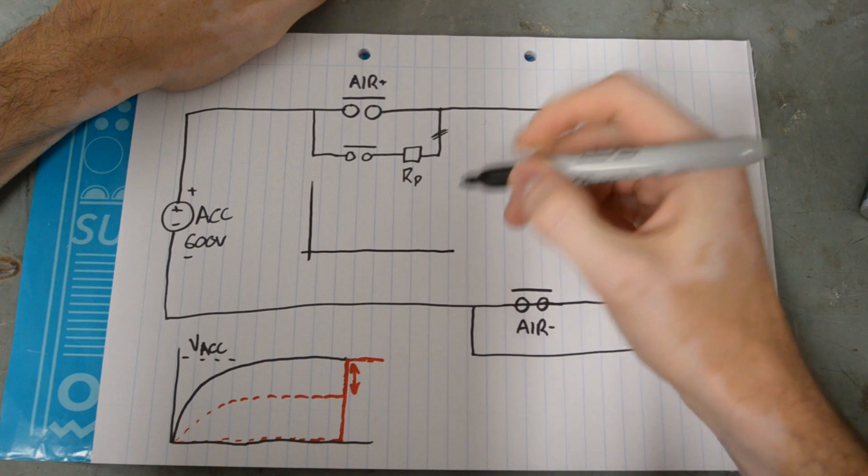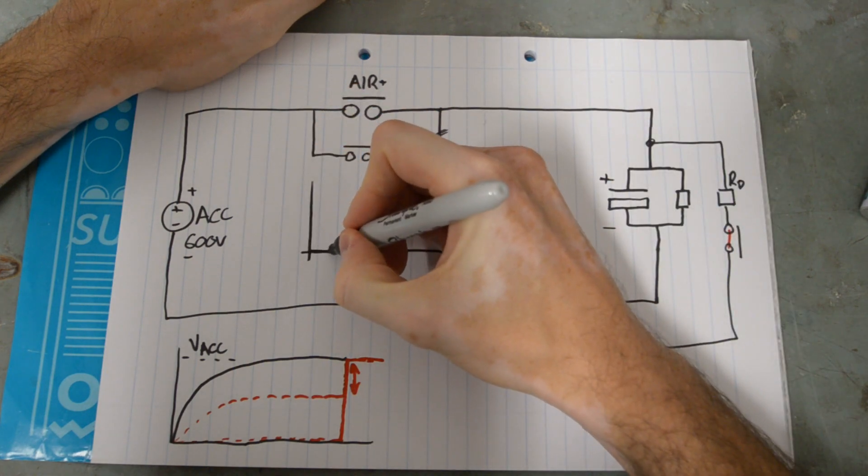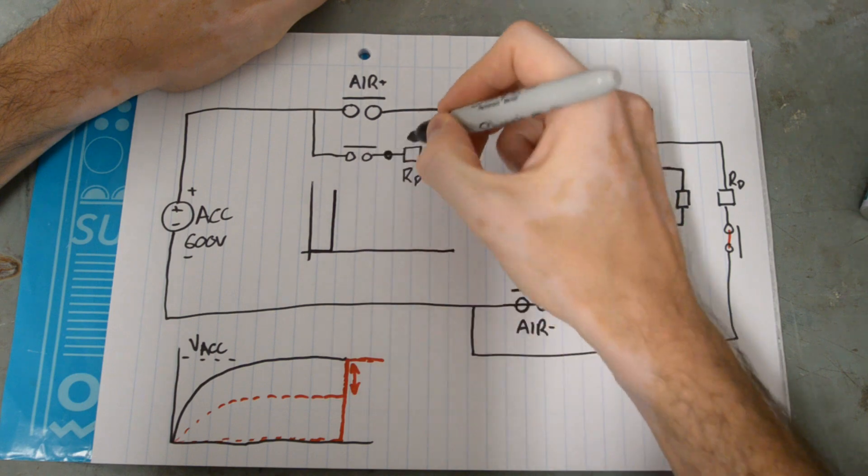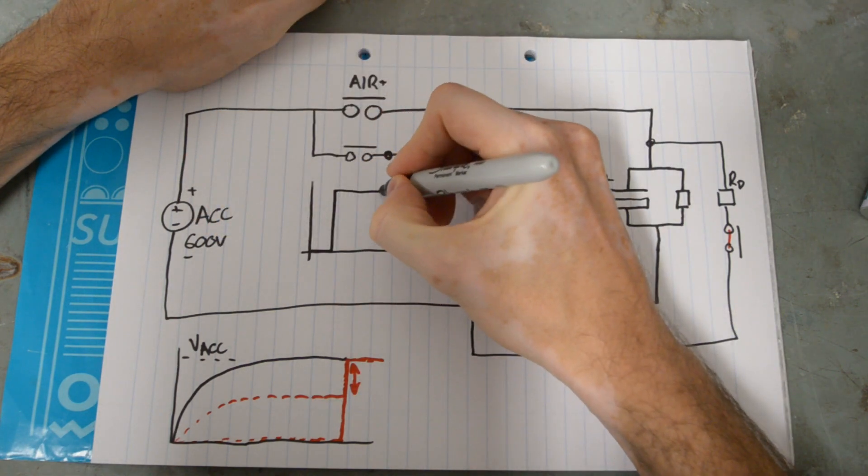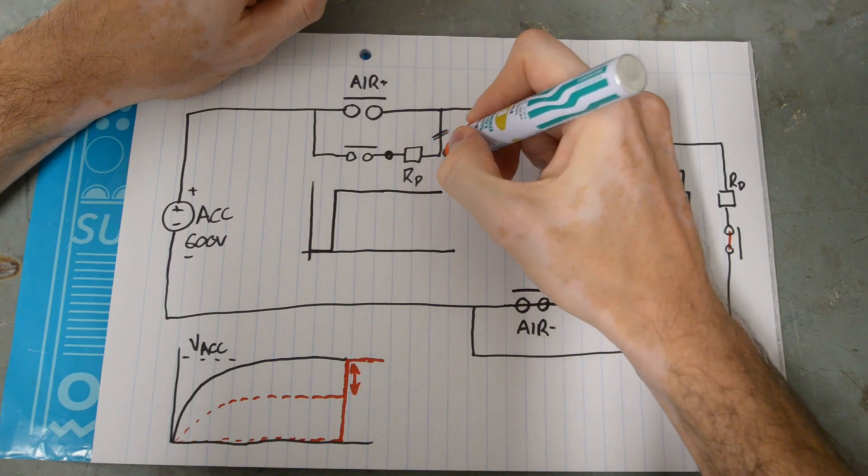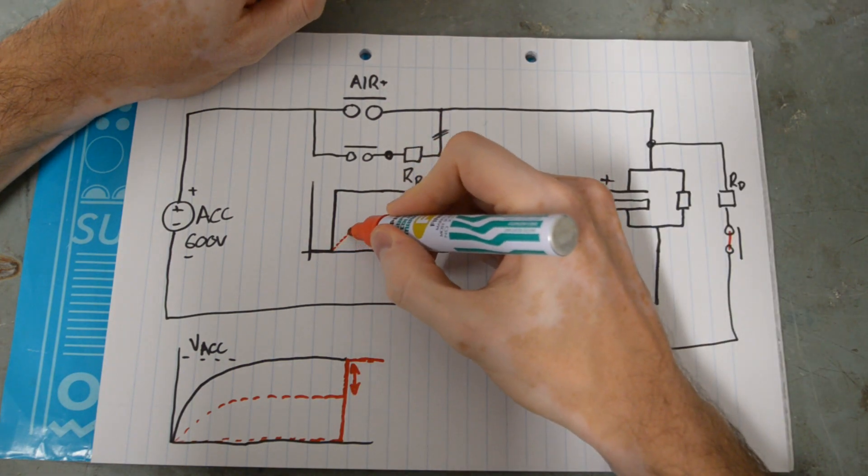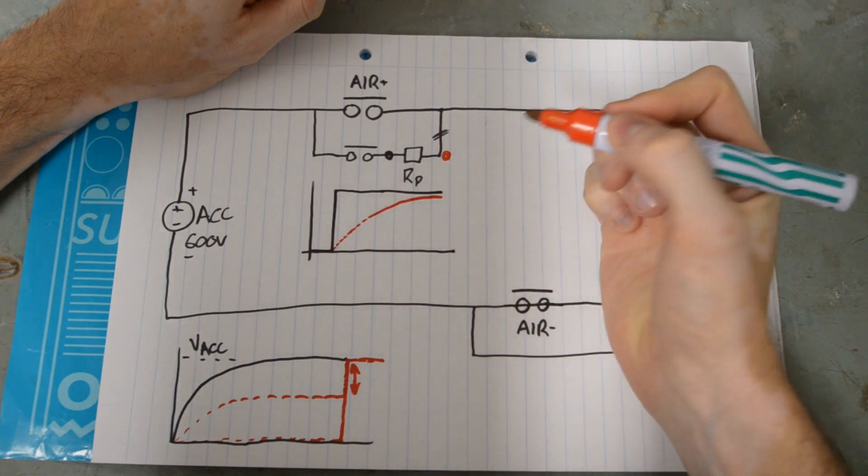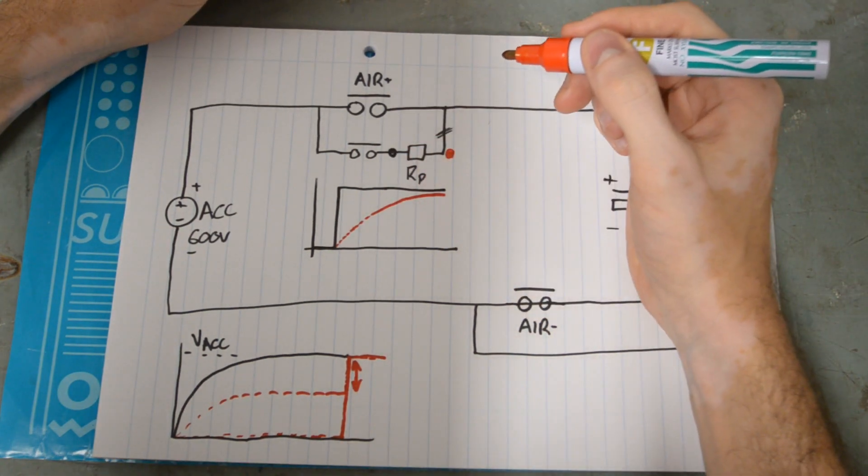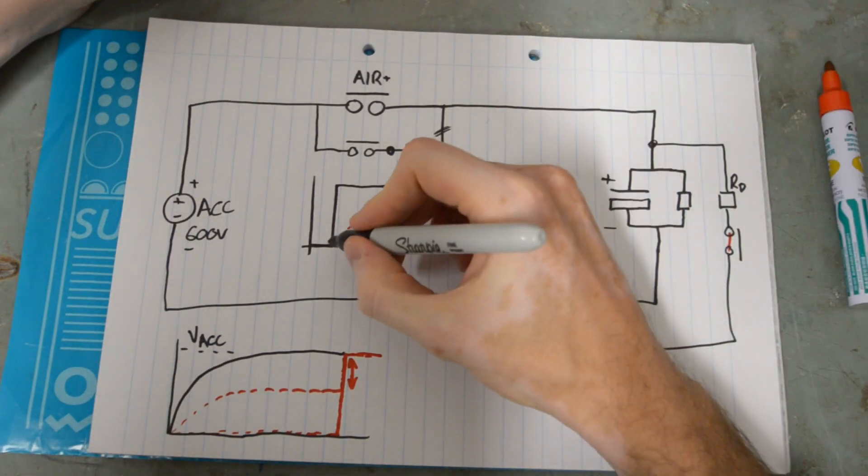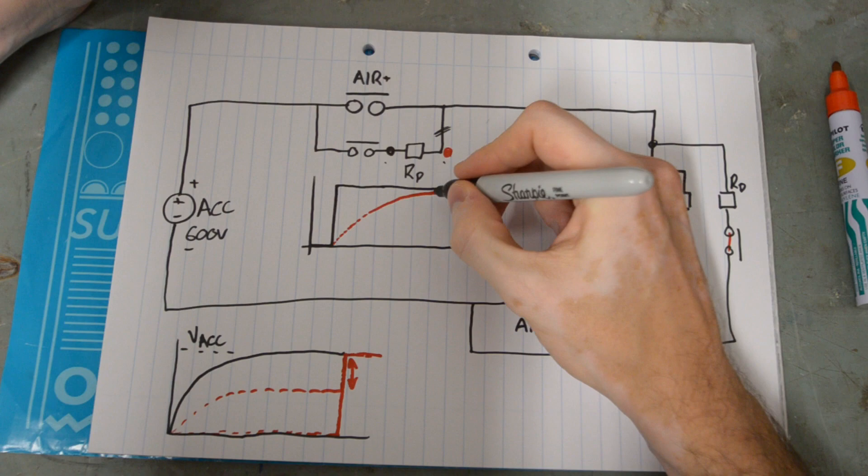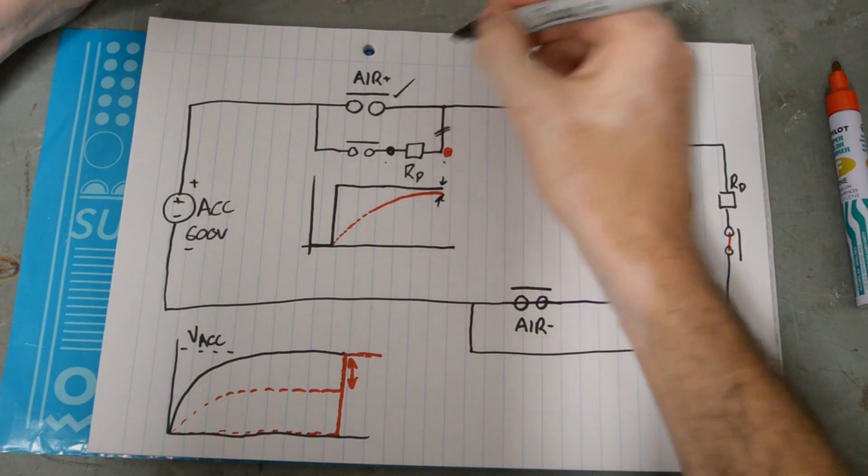If this is our timeline, we have at some point the pre-charge relay is going to close and the voltage on this side of the pre-charge resistor is going to snap up because that's connected directly to the accumulator. So that voltage is going to shoot up and stay there. And the voltage downstream is going to go through that nice RC charging curve. So if there was some way that we could measure this voltage and this voltage and compare them, then we would be able to put into place some kind of control scheme that looks for the tractive system side being very close to the accumulator side voltages. And once you get a very small gap here, that's when you can close your air.